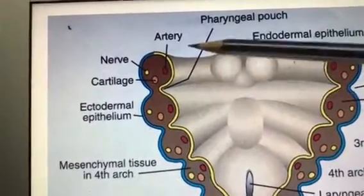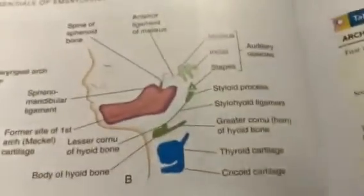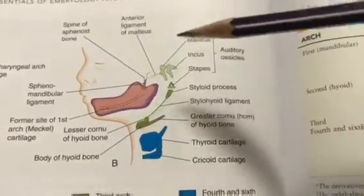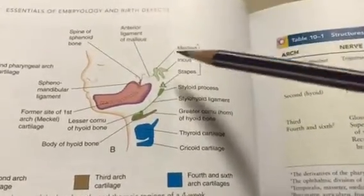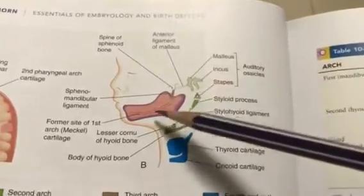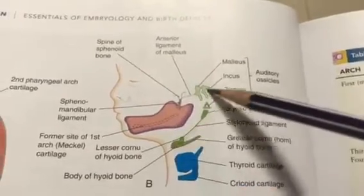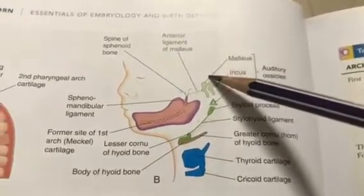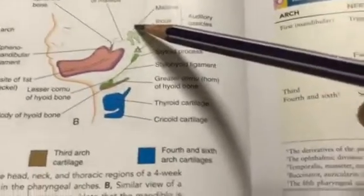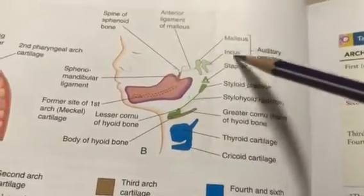We are going to see each arch and its derivatives. For the first arch, look at this picture from the 'Before We Are Born' book by Keith Moore — keep this picture in your memory. The cartilage of the first arch: the dorsal end of the cartilage will be transformed into the malleus and incus, which are the ear ossicles.